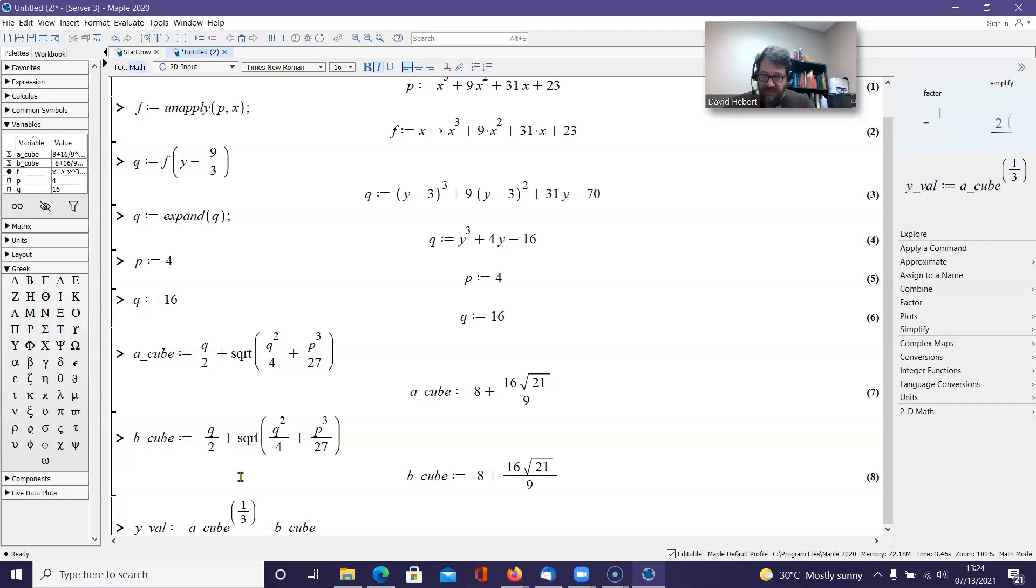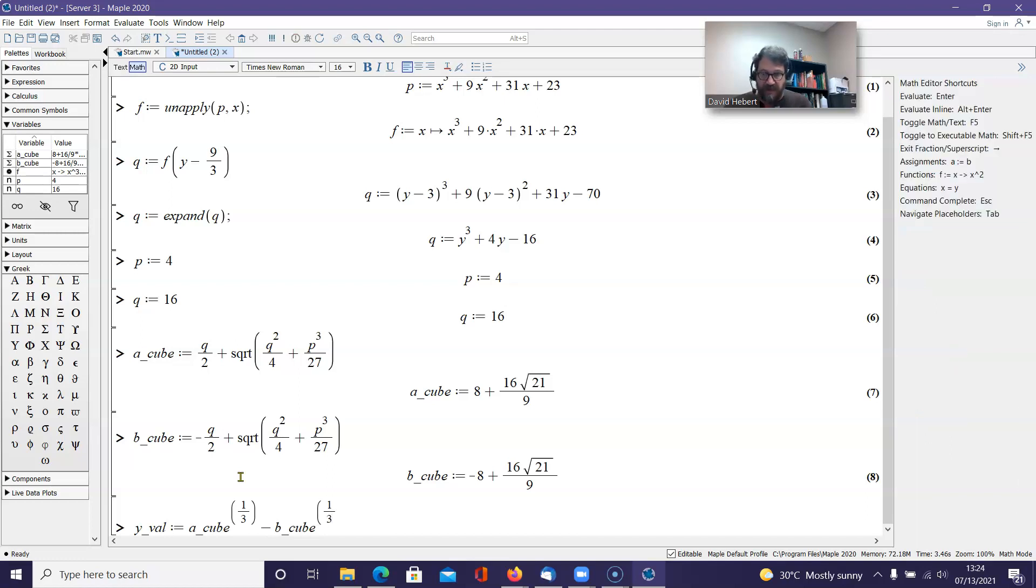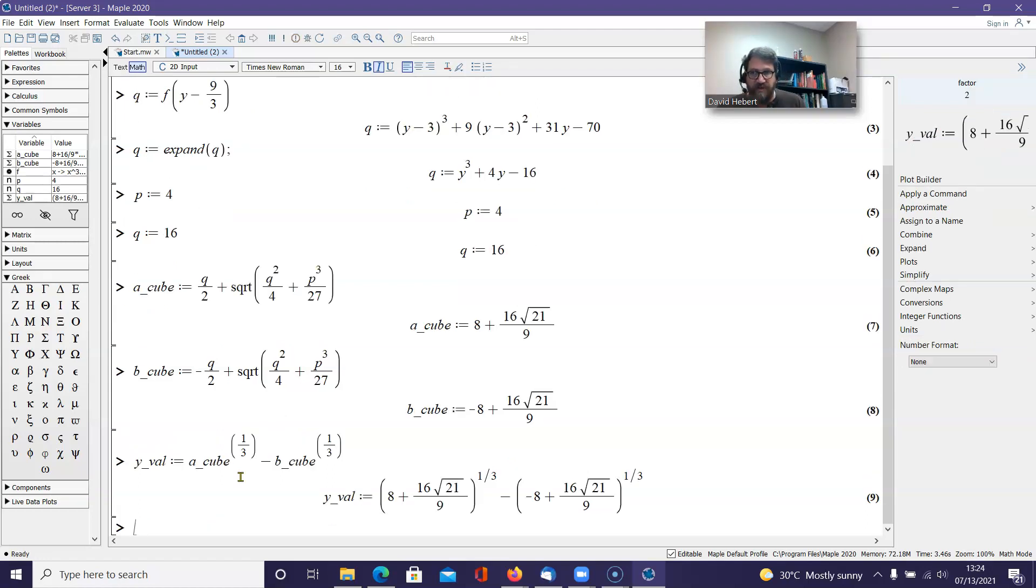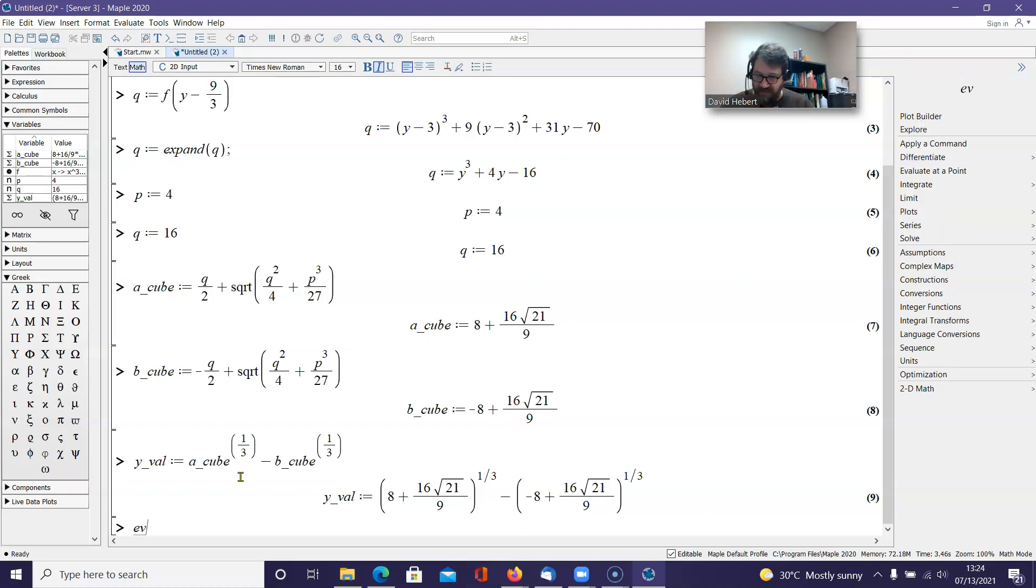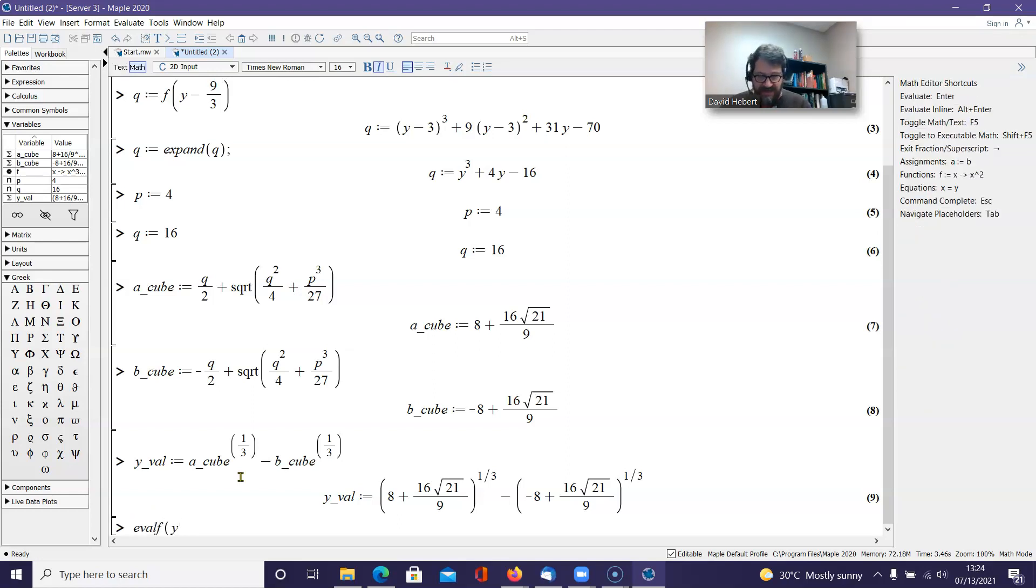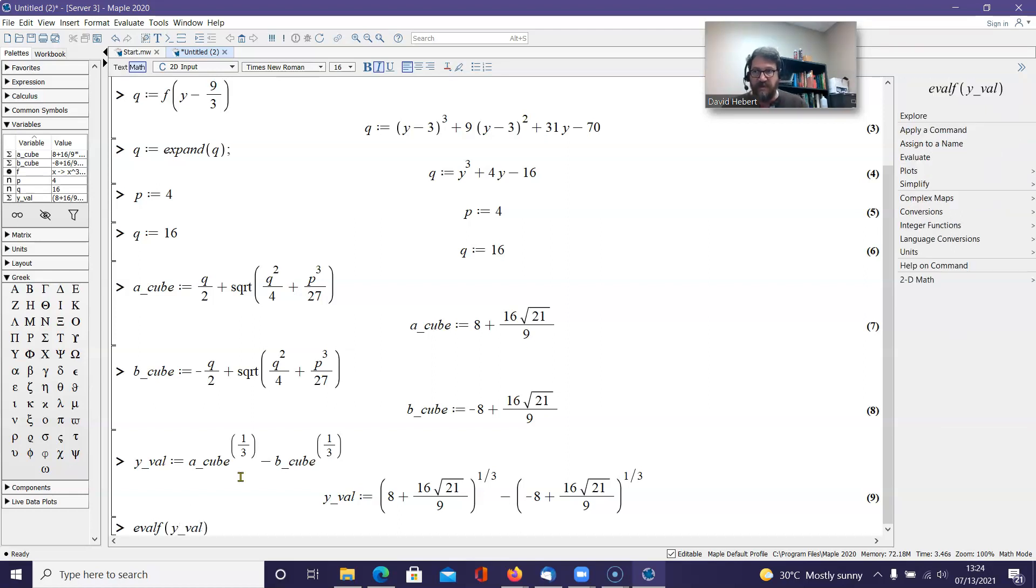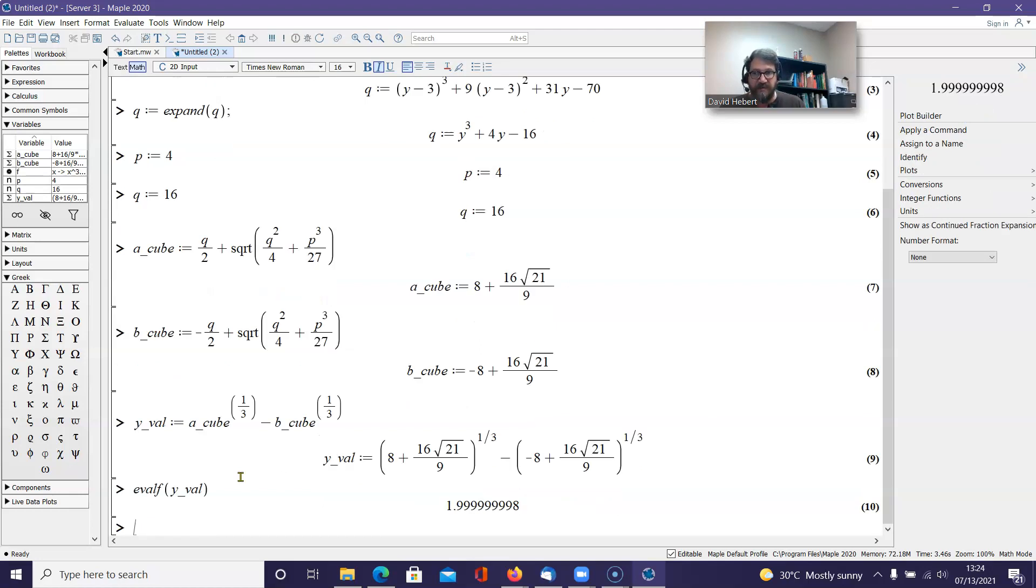And we're going to subtract from that b cubed, and we're going to raise it to the rational power of 1 divided by 3. And we now have y value. There's my y value. But that may not help us. So what I'm going to do now is evaluate to floating point y val. I want to get something that looks like a decimal to help me.